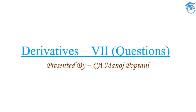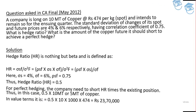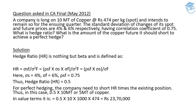So let's mark the beginning of this particular presentation which is going to be the final conclusion of derivatives, and I hope you guys are going to be liking it. The first question of the day — this question was asked in the CA Final examination for May 2012. It says: a company is long on 10 metric ton of copper at the rate of Rs. 474 per kg.